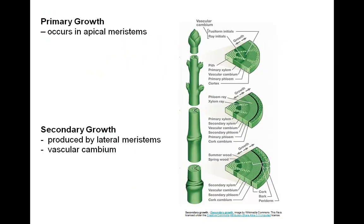There are two types of growth that take place in dicots. Primary growth occurs in the tips of the plant body where apical meristems are located, such as in the terminal bud. Primary growth gives rise to cells which cause the plant to lengthen upward as the shoot grows taller and downward as the roots grow deeper.